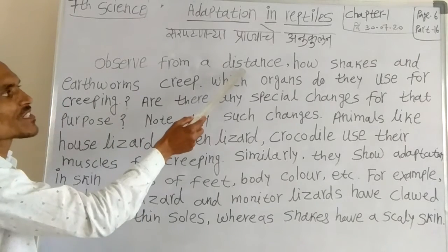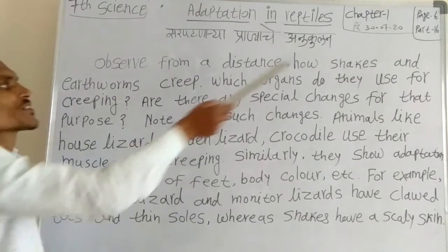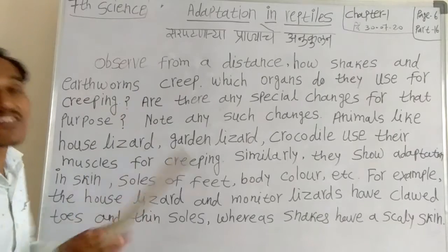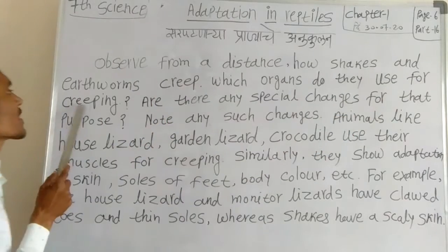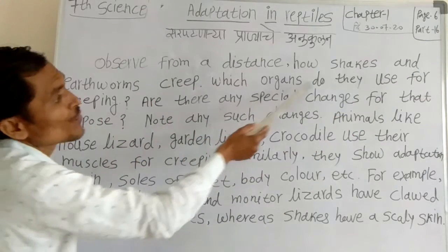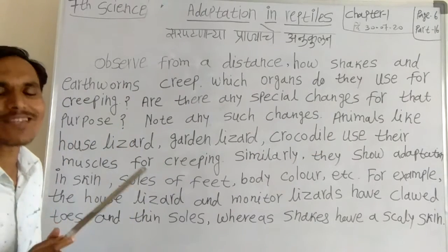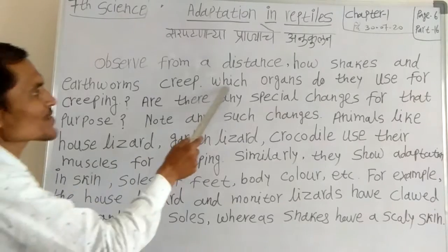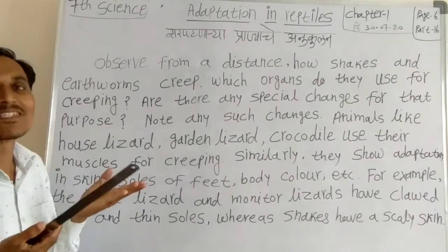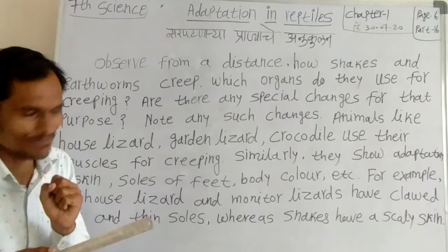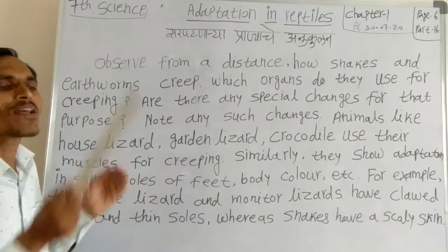Keep a formal safe distance from snakes. How do snakes and earthworms creep? Which organs do they use for creeping? They use skin and muscles. The snakes and earthworms use muscle and skin for creeping.